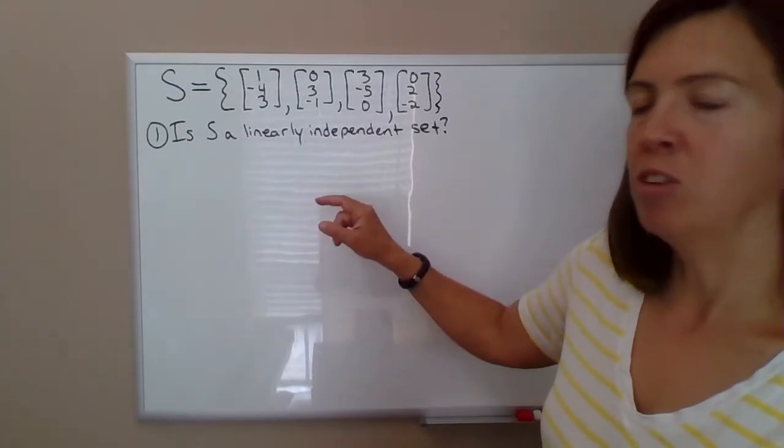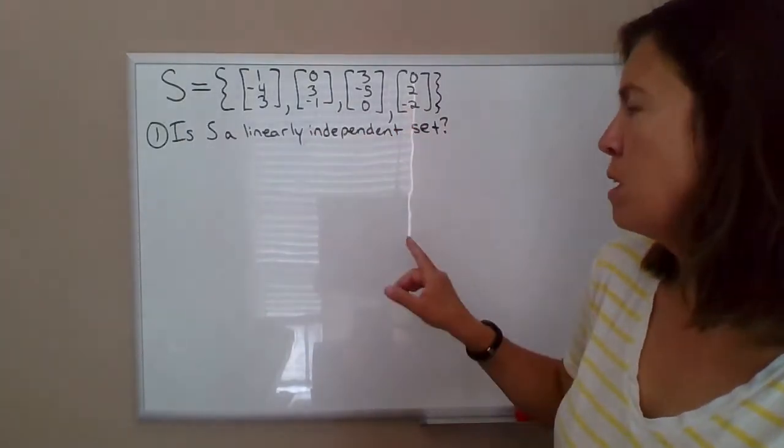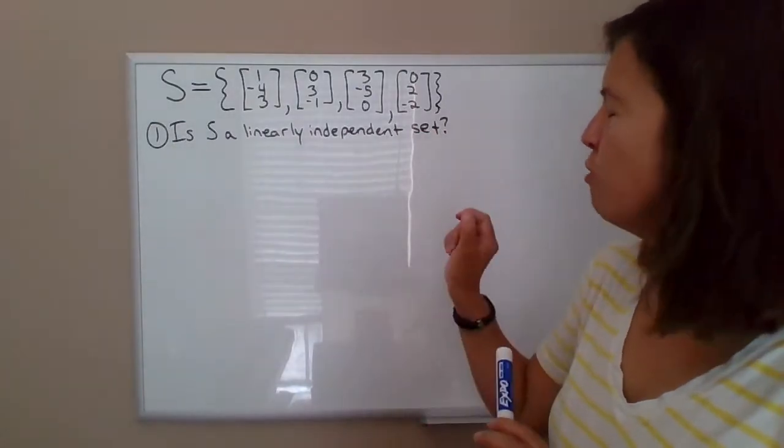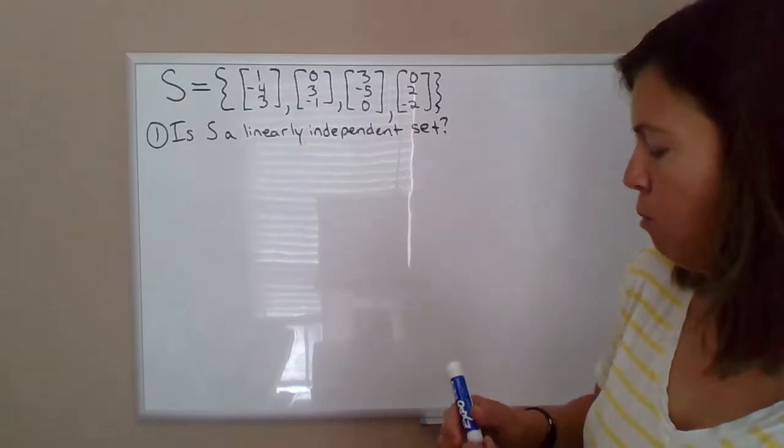So first part of the question is determine whether this collection of vectors is a linearly independent set. We've done that way back in the past, but I want to set this up, be clear about why we're doing what we're doing.